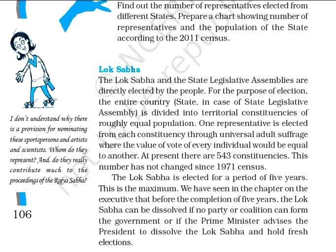When these members are elected, they are elected directly by the people. For this purpose, the whole country is divided into constituencies whose population is roughly equal. Each constituency has a roughly equal population, and from each constituency a representative is chosen through universal adult franchise. From 1971, we have this number of 543 constituencies in India, and this number has remained the same till now.